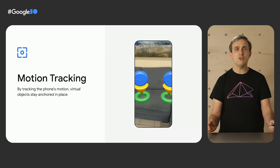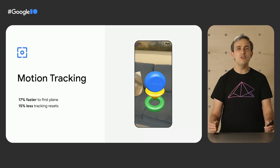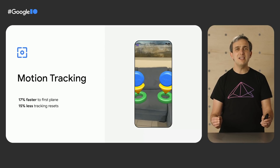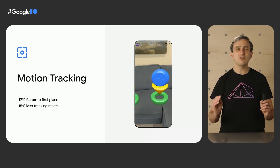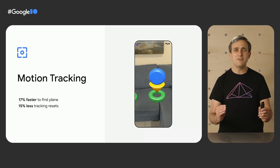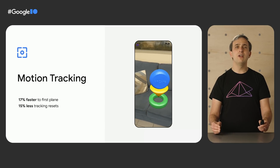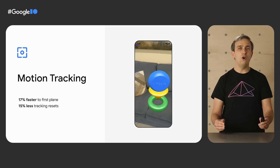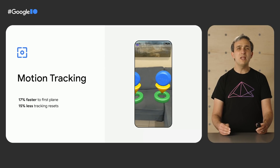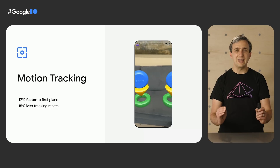Over the past year, we've made significant improvements to motion tracking. We've reduced the average time it takes for motion tracking to start up and a plane to be found by 17%, and we've reduced the amount of time motion tracking gets lost by 15%. This allows experiences to start up faster and be more reliable, all without any code change needed in an ARCore app. But we want to do better, and thanks to Google's investment in machine learning, we can.